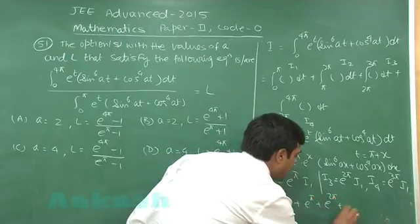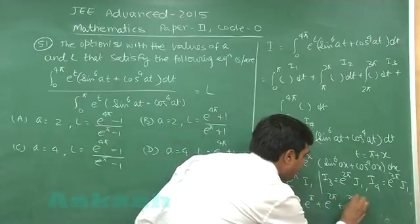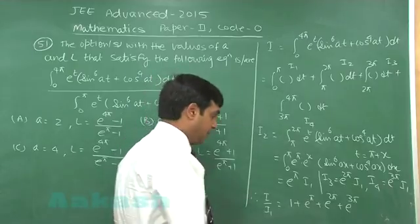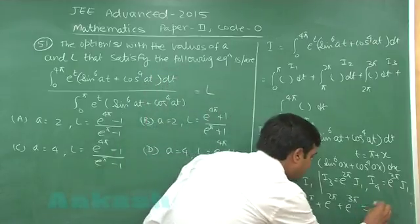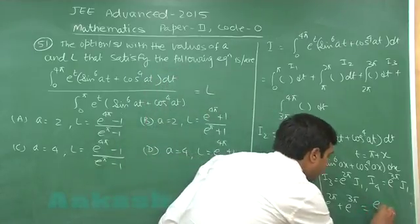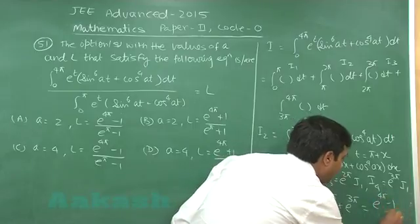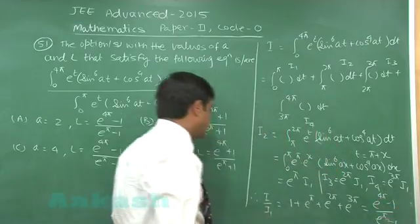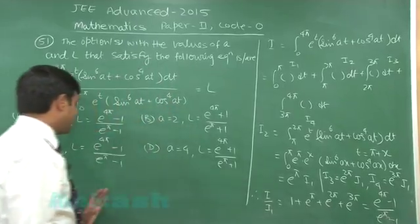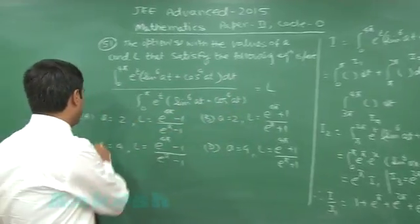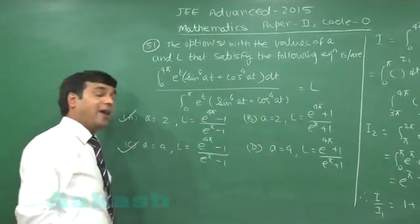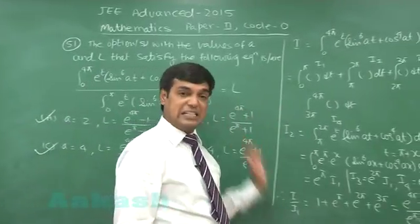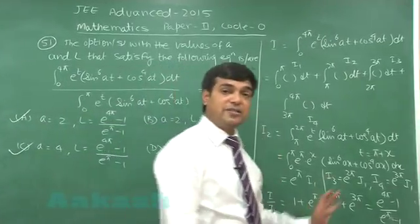This is independent of the value of a and forms a simple geometric progression, which can be written as (e^(4π) − 1)/(e^π − 1). From the given options, we can see that options a and c are correct. In this manner we solve this integral.